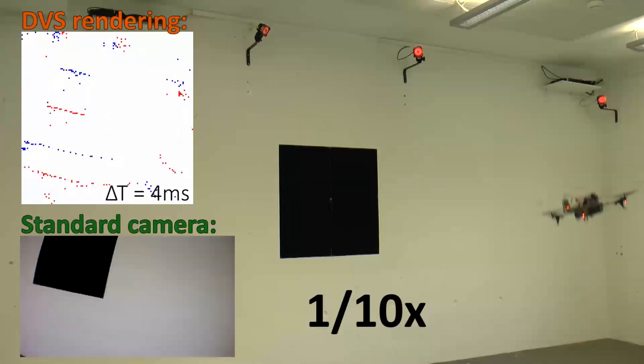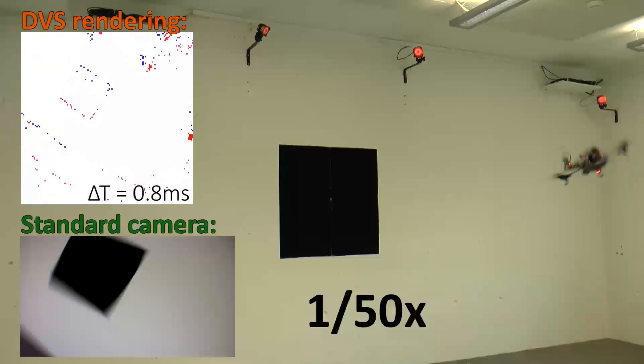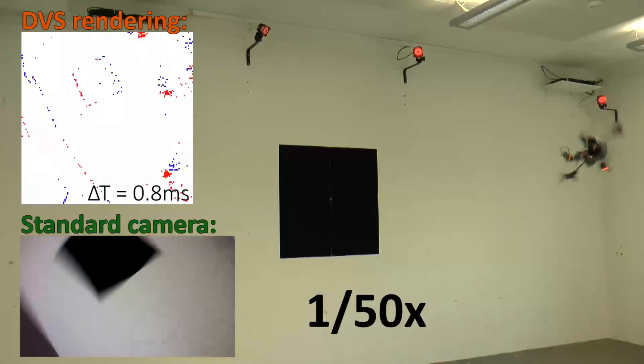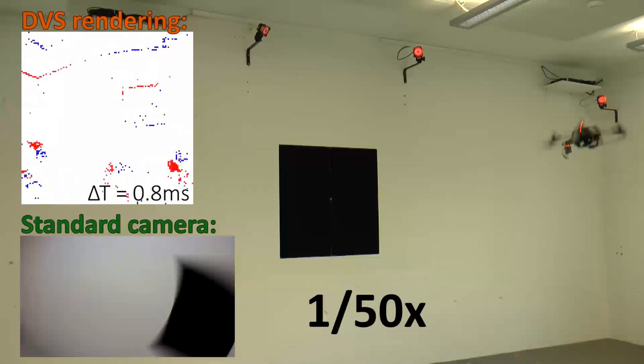However, if we render the DVS output appropriately, we can still see sharp lines. For these DVS renderings, we accumulate all the events over a time interval of delta T in one image. By choosing this delta T small, we can render slow motion video.